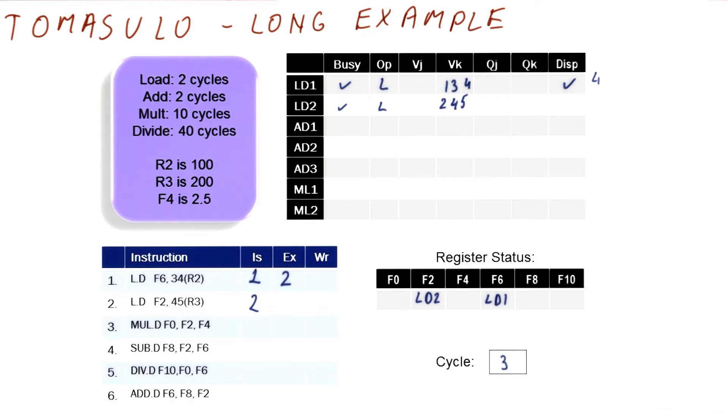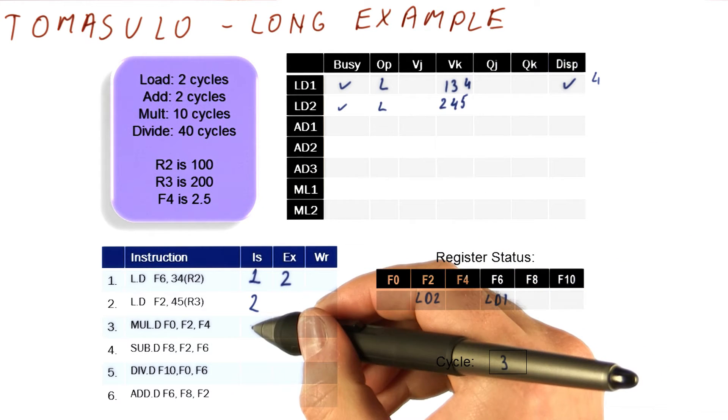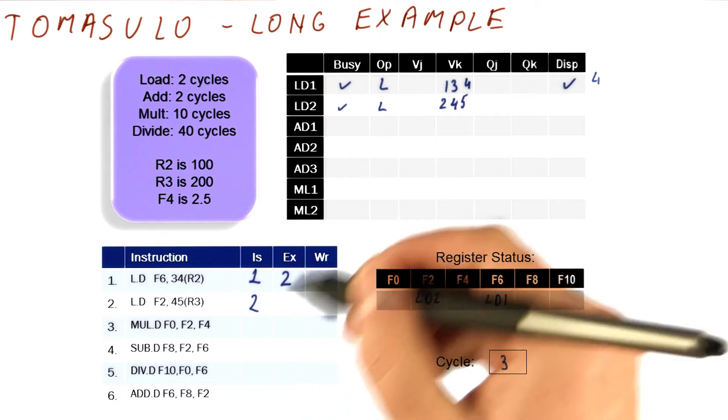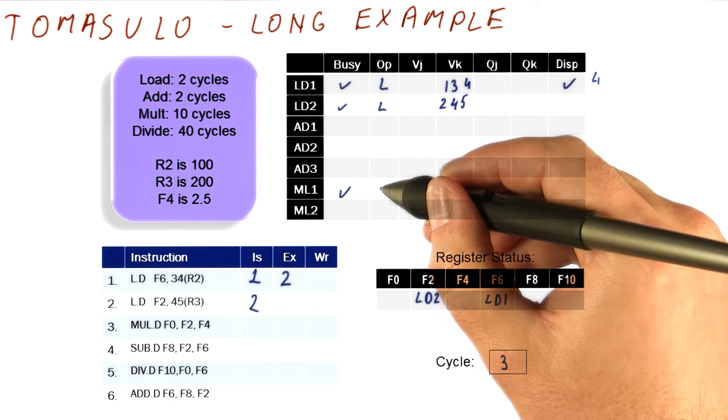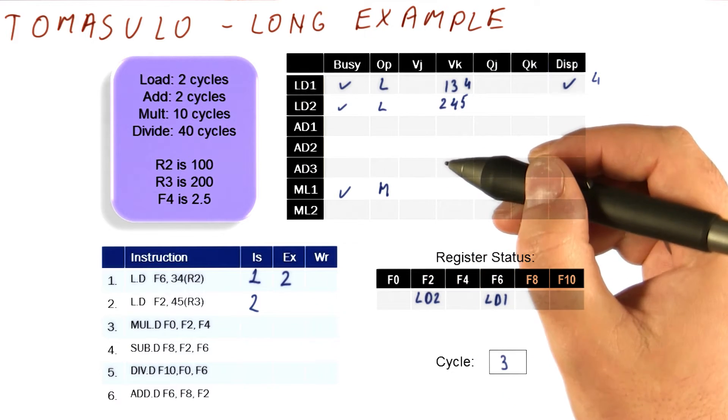So now let's look at cycle three. In cycle three, we will try to issue the next instruction, which is this multiplication. We will look at whether we have a unit, yes we do. It's going to be a multiply instruction.